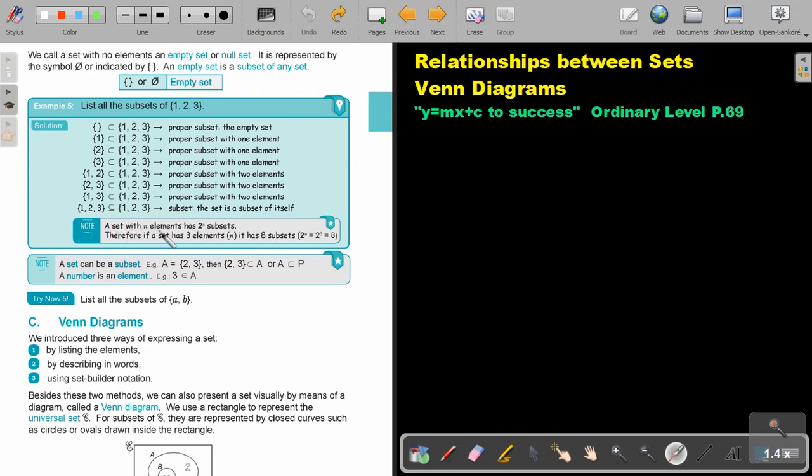So a set with n elements has 2^n subsets. Therefore, a set with three elements, so 2 to the power of 3, that will be 8. So let's count, one, two, three, four, five, six, seven, eight. Excellent.